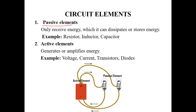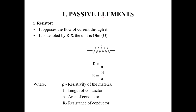We know that passive elements are resistor, inductor, and capacitor. A resistor opposes the flow of current through it. It is denoted by R, and its unit is Ohm. This is the symbol of the resistor.